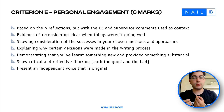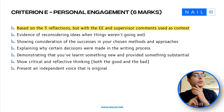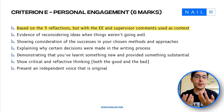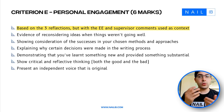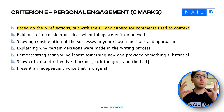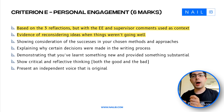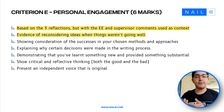Finally, criterion E is personal engagement, worth six marks. This is mostly based on the three reflections, but the EE itself and supervisor comments will be used as context. Your supervisor will write comments about your progress and process for writing the EE, which the marker will read alongside your EE and reflections to determine your personal engagement marks. They want evidence of reconsidering ideas when things weren't going well — showing that you thought about your idea and decided to change your topic, research question, approach, or techniques.